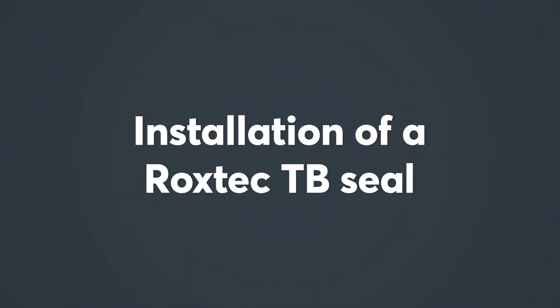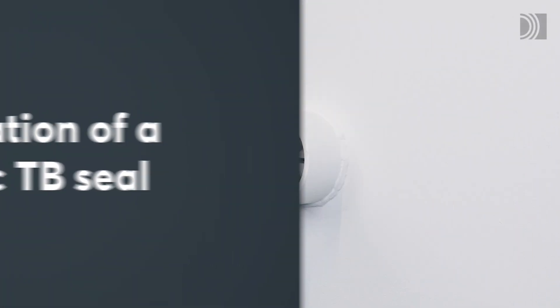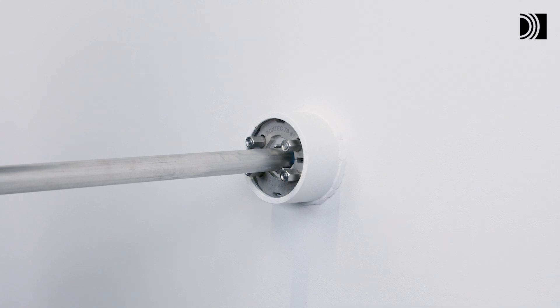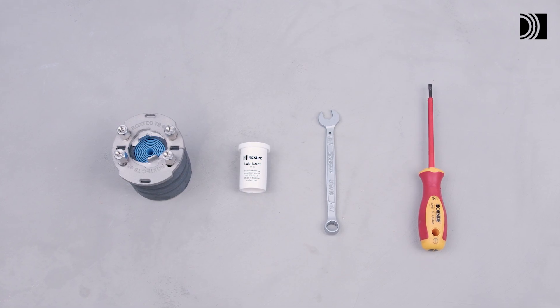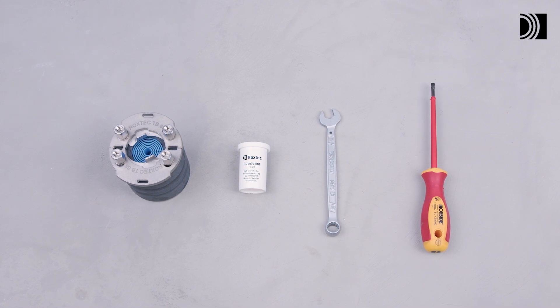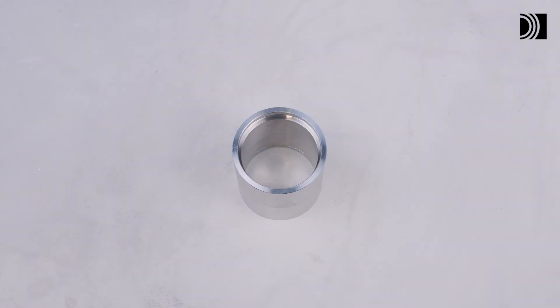Installation of a Roxtec TB seal. To install a Roxtec TB seal with multi-diameter, you need the seal and Roxtec lubricant as well as a spanner and a flat tool. You install it in a Roxtec SL-TB sleeve.